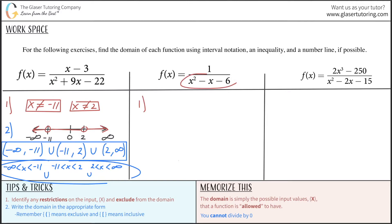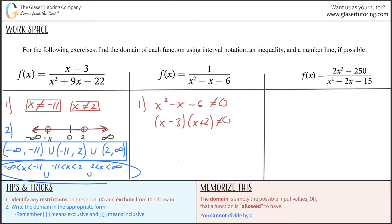For the next problem, we again have x in the denominator, so the denominator cannot equal zero. We need two numbers that multiply to negative 6 and add to negative 1 — those are negative 3 and positive 2. So we get x minus 3 cannot equal zero, and x plus 2 cannot equal zero. Therefore x cannot equal 3, and x cannot equal negative 2. These are the two restrictions.